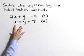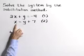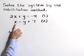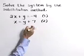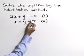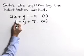Now if we use the substitution method, the system is set up perfectly for that because in equation 2 we already have x solved for. x is equal to y plus 7. Therefore, we can take this value from equation 2 and substitute it in for x in equation 1.